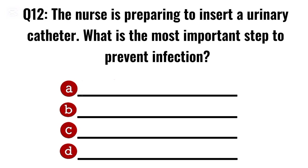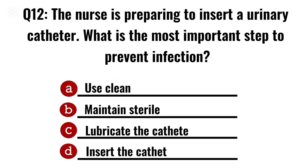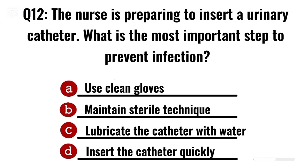Question 12. The nurse is preparing to insert a urinary catheter. What is the most important step to prevent infection? Correct option B: Maintain sterile technique.